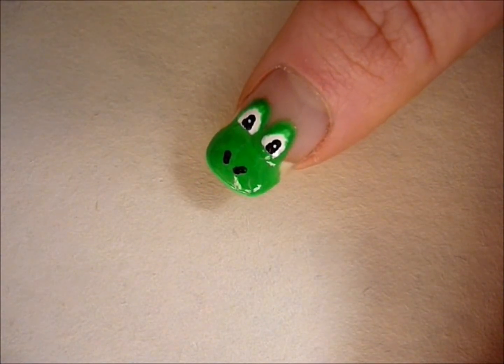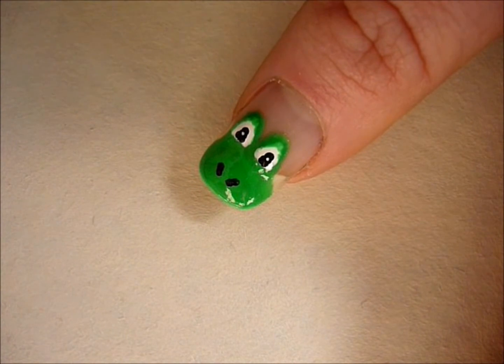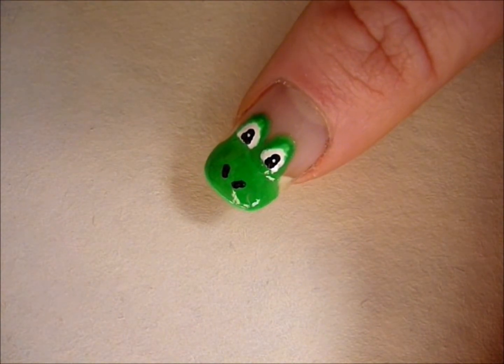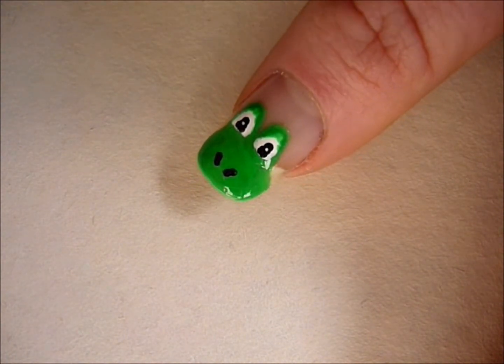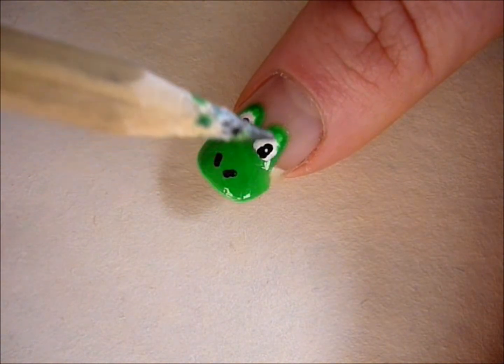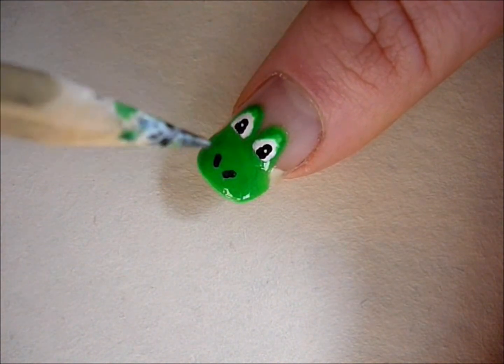What you can also do is create the Yoshi face on one of your nails. I did it on my thumb, and all you do is create the same egg shape, except using green, and then you add two green humps for the eyes.